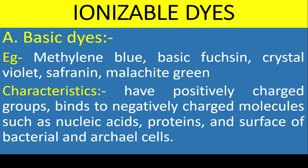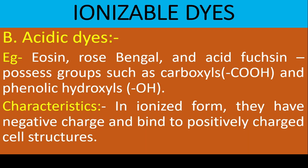Malachite green is used in spore staining. The second type is acidic dyes. Examples include eosin, rose bengal, and acid fuchsin. Acidic dyes possess groups such as carboxyl and phenolic hydroxyls. In their ionized form, they are negatively charged and bind to positively charged cell structures.